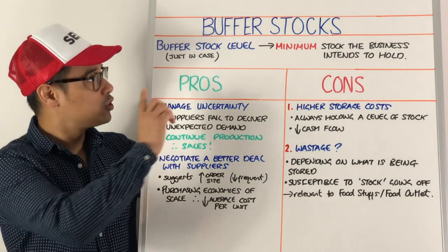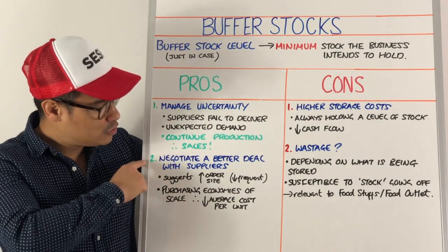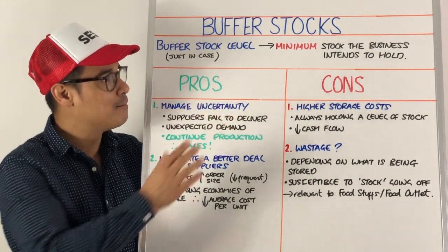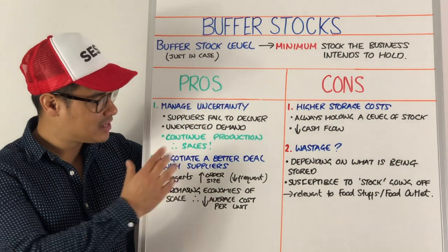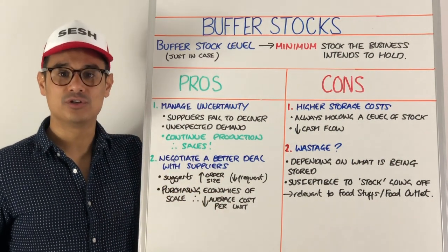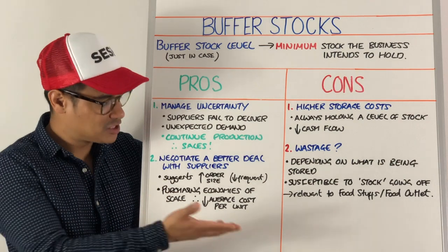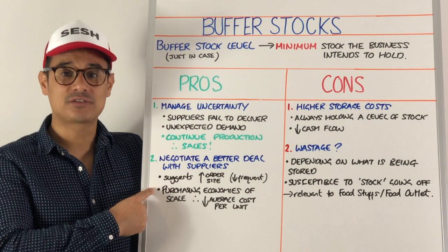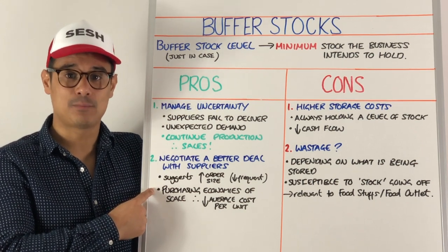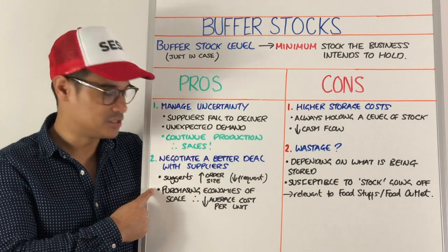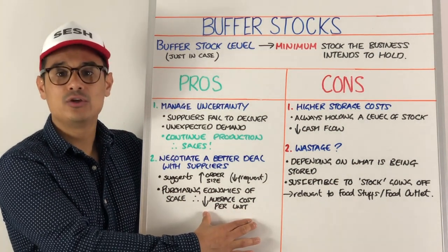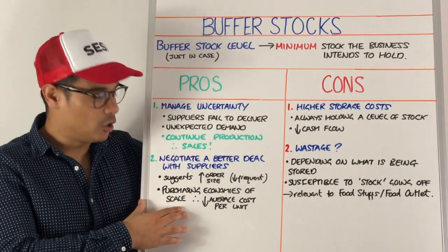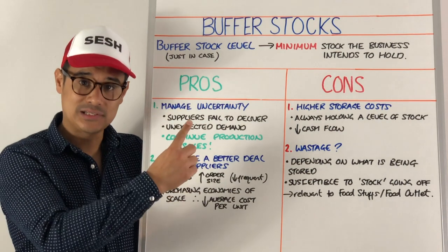Additionally, a secondary benefit of buffer stocks is that you can negotiate a better deal with your suppliers. Because if you're holding a minimum level of stock, it suggests you're making a larger volume of orders. Because your order size is bigger and possibly less frequent, you should be getting purchasing economies of scale — you become more important to your suppliers, and therefore your cost per unit is brought down, increasing your profit margin.